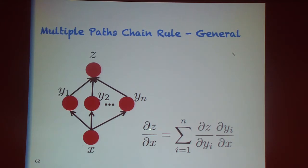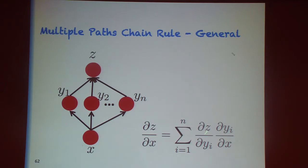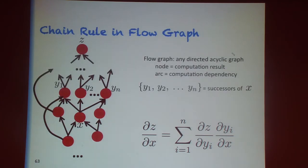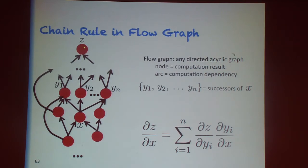To get the gradient dz/dx, if we already know dz/dy_i for each successor y_i, we can compute dz/dx by summing the products of dz/dy_i times the partial derivatives on the arcs. We can do this in a general flow graph where each node is the result of a computation, and we express the partial derivative of a scalar output like the loss with respect to any variable x as the sum over successors of (dz/dy_i) times (dy_i/dx).